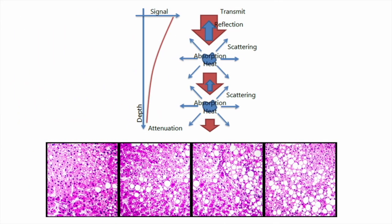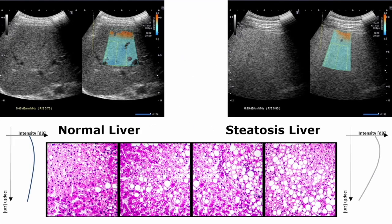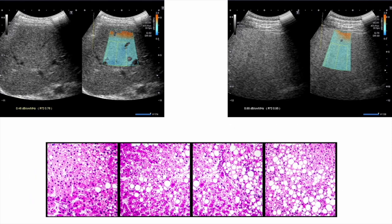The fat that infiltrates the liver has the property of absorbing more ultrasound beam compared to normal liver tissue. This unique ATI technique, associated with real-time imaging, allows you to quantify this absorption difference and measure on a large sample a precise attenuation coefficient correlated at the level of steatosis.